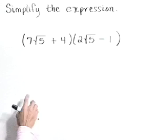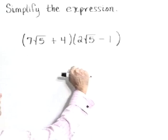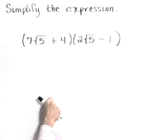Simplify the expression: 7 times the square root of 5 plus 4, quantity, times the quantity 2 root 5 minus 1.